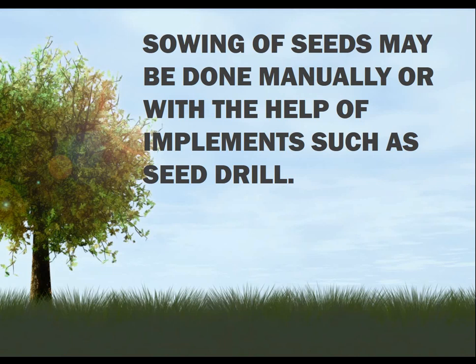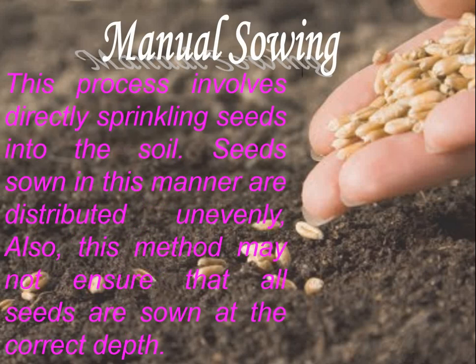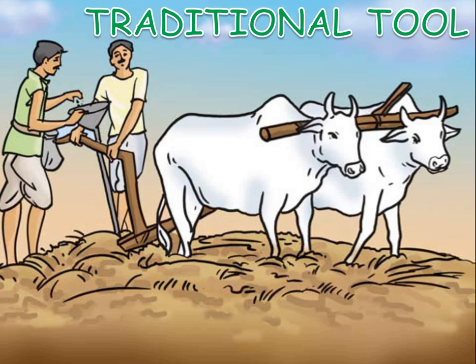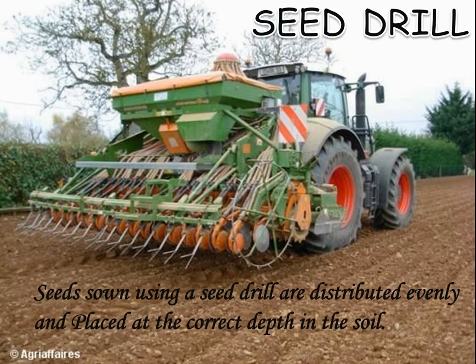Sowing of seeds may be done manually or with the help of implements such as a seed drill. The manual process involves directly sprinkling seeds into the soil; seeds sown in this manner are distributed unevenly and this method may not ensure that all seeds are sown at the correct depth. The seed drill is a traditional tool for sowing seeds. Seeds sown using a seed drill are distributed evenly and placed at the correct depth in the soil.